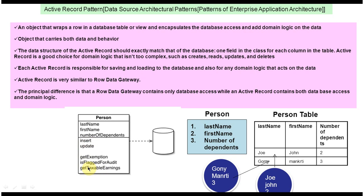The next point is that the object carries both data and behavior. The third point is that the data structure of the Active Record should exactly match that of the database table. So whatever fields are in the class should exactly match the database table columns — for example, last name, first name, and number of dependents.